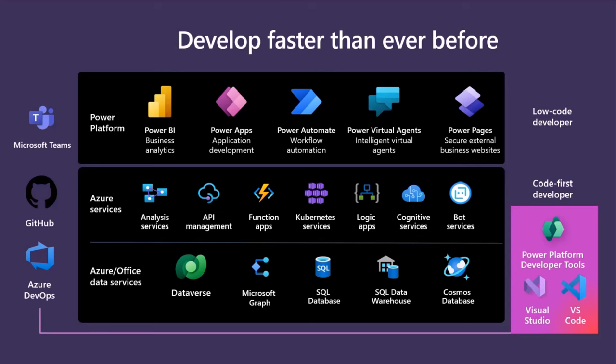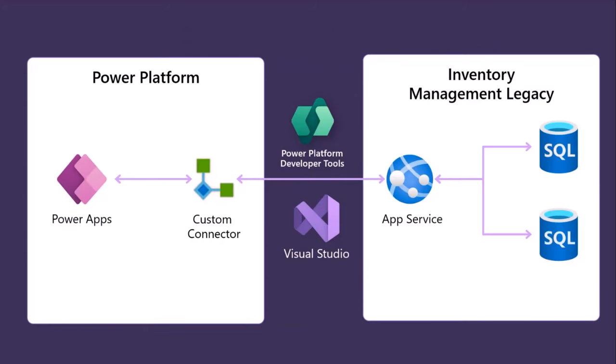The scenario we'll cover today is digital modernization. We have a legacy inventory management system — a developer has an API to get data from SQL databases about item quantities across warehouses. It's a legacy system with no mobile capability. The developer uses Power Platform to create a custom connector — a wrapper around the API — making all that legacy data available in Power Apps, so field technicians can check inventory on the go from their phones.